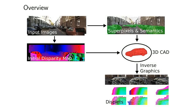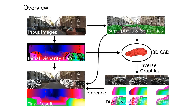We associate a binary random variable indicating the presence or absence with each Displet, and formulate disparity estimation as maximum a posteriori inference in a conditional random field. In particular, we optimise over disparities as well as Displet indicator variables. While our data term enforces photoconsistency, our prior encourages image regions of a certain semantic class label to be explained by geometries of the corresponding class.